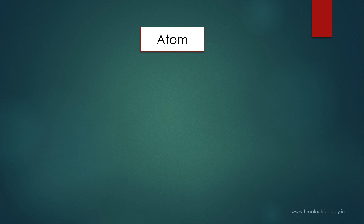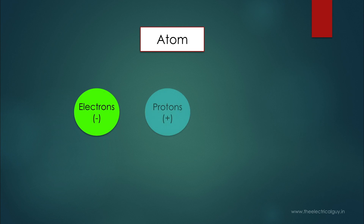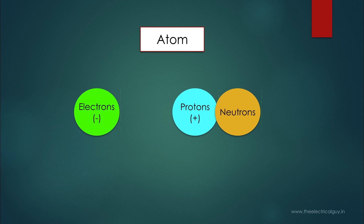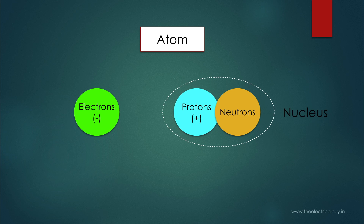Every atom consists of three main parts: electrons, protons, and neutrons. Electrons have a negative charge. Protons have a positive charge. And neutrons, as the name suggests, are neutral — they do not have any charge. In an atom, protons and neutrons are very tightly bound together, and this tight bonding is known as the nucleus.